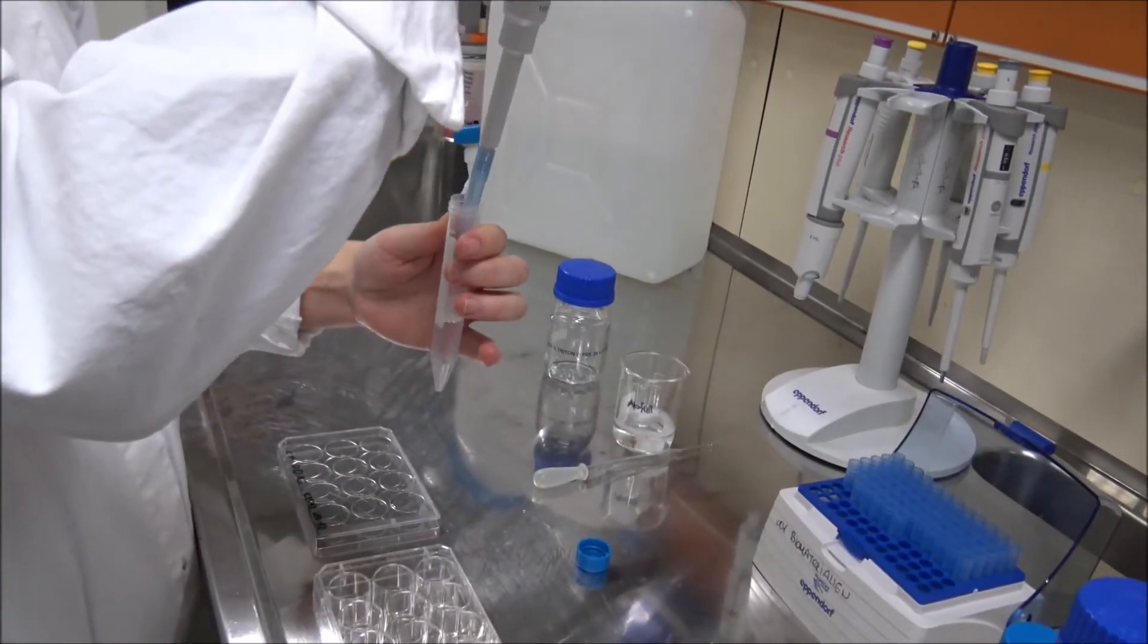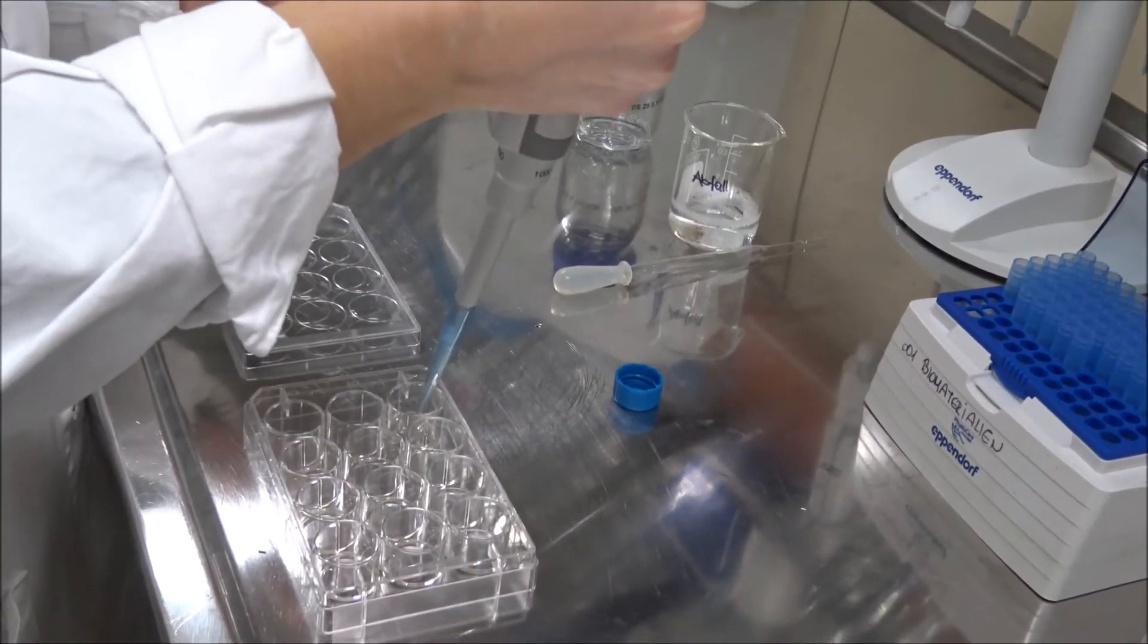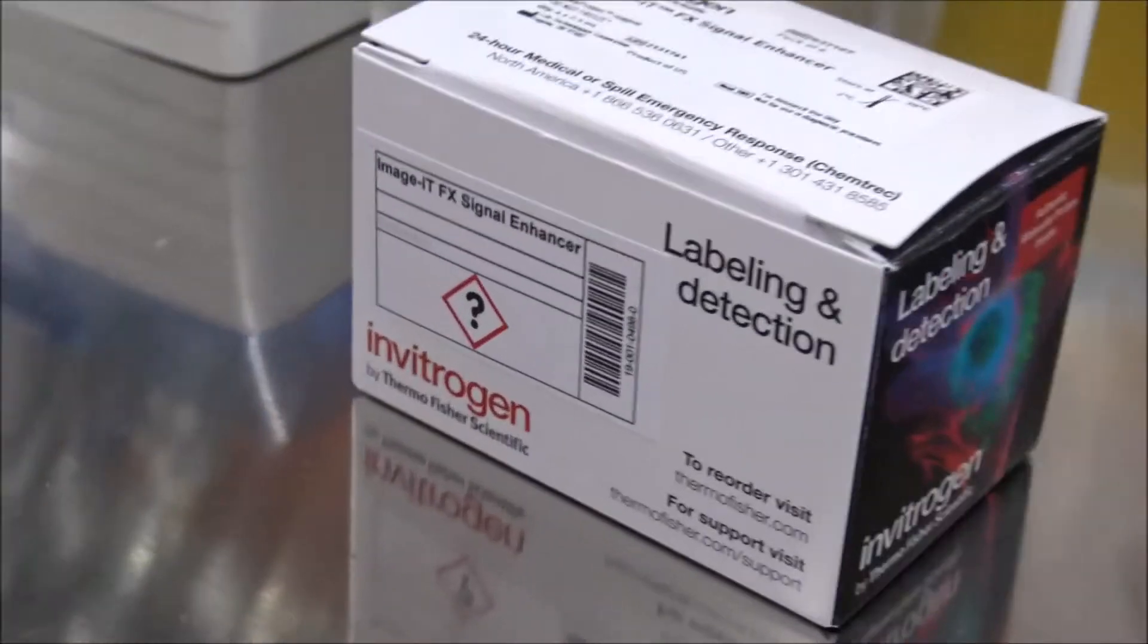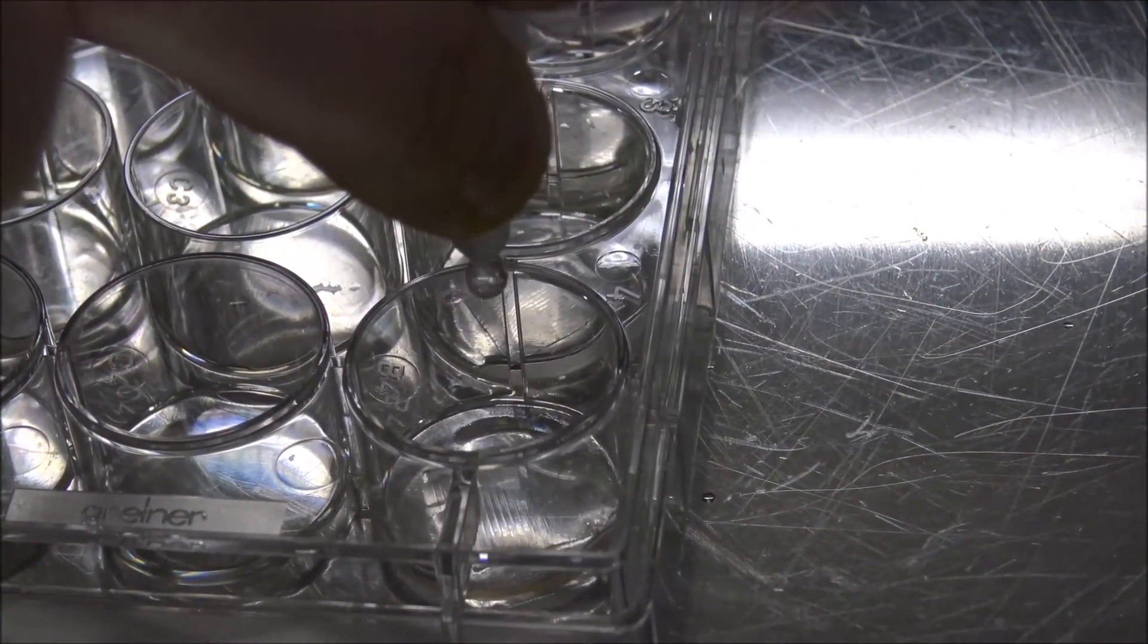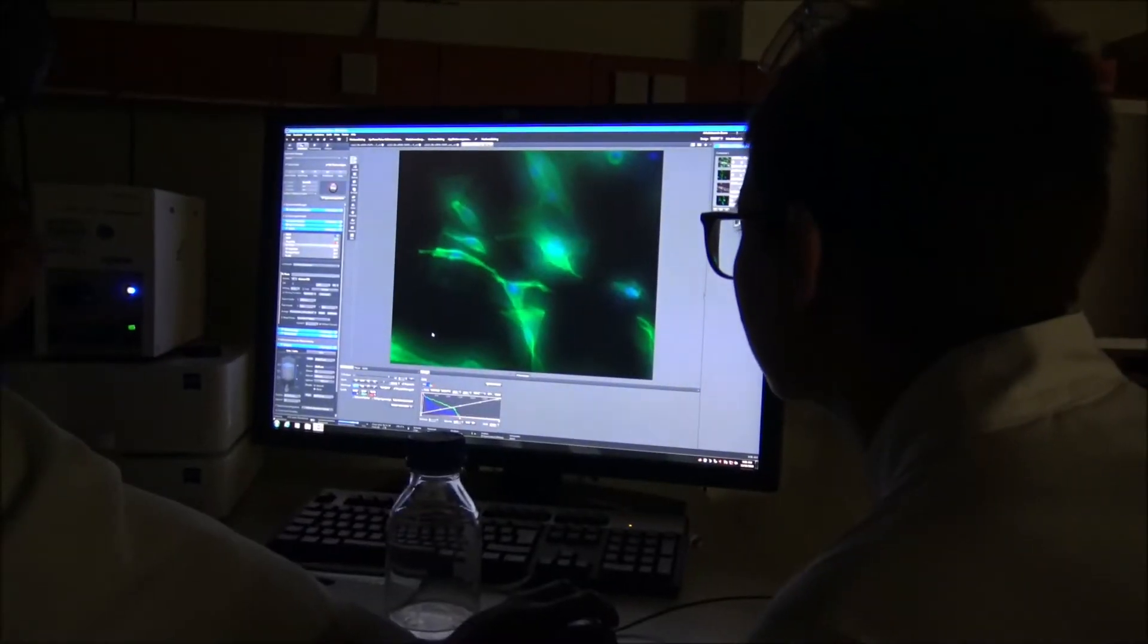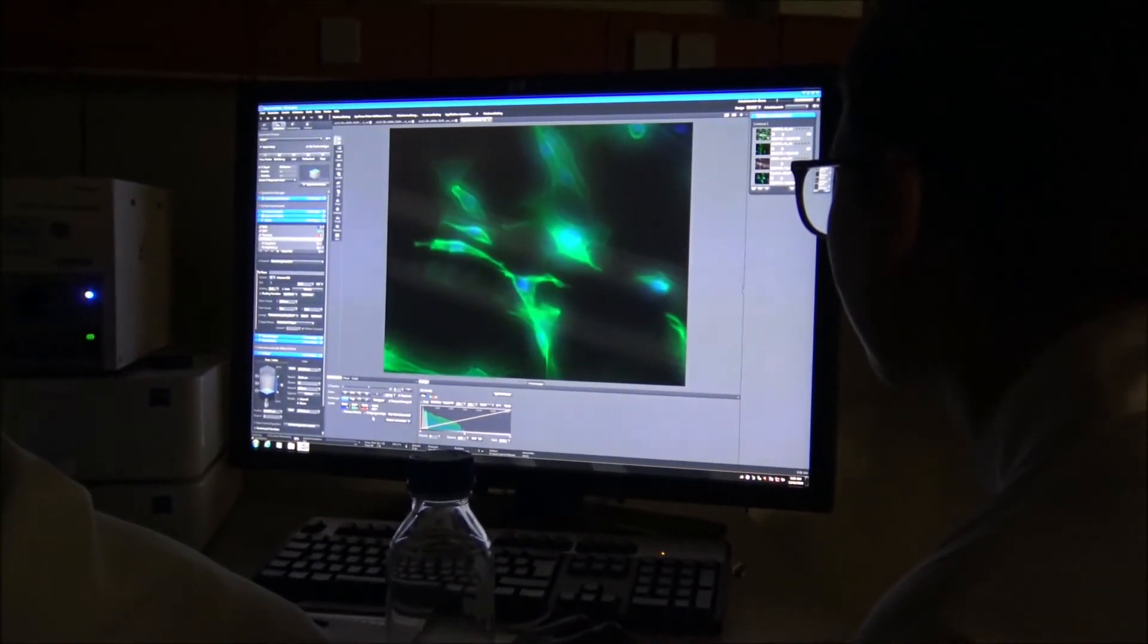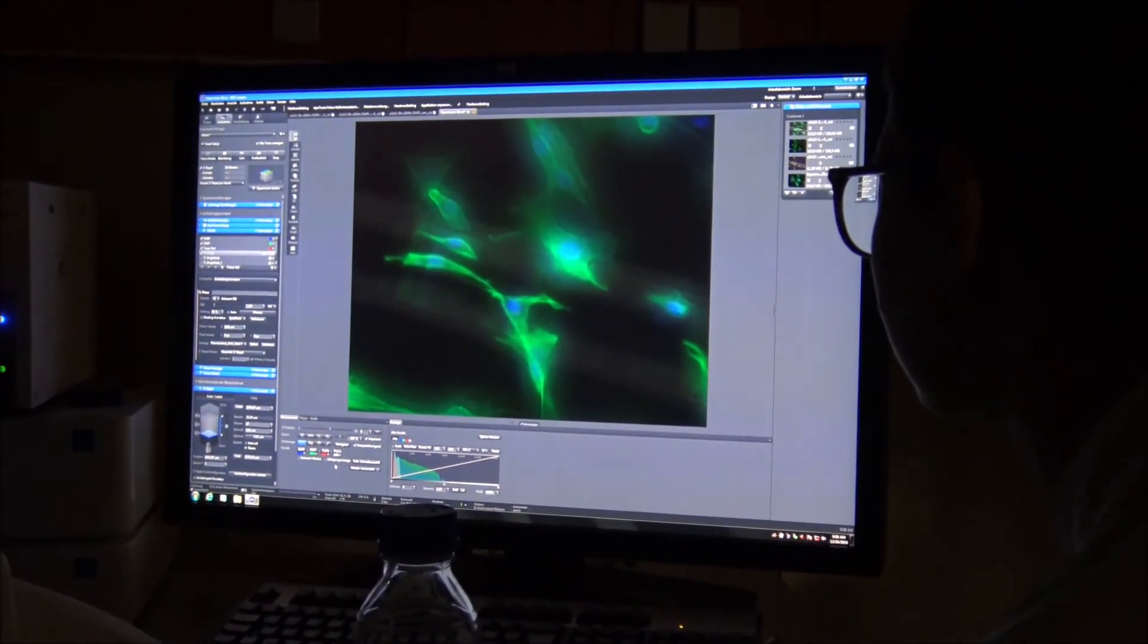To get an idea of the morphologic changes due to differentiation, we stained the nucleus with Hoechst, the actin skeleton with phalloidin, and a specific actin fiber called alpha smooth muscle actin with antibodies. The staining showed if the myoblasts differentiated into myotubes as they are elongated fibers and contain multiple nuclei. Alpha smooth muscle actin indicates the contractility of the cells.